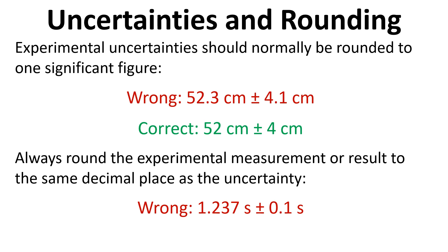Here's another example. This would be incorrect because the measurement has too many decimal places. Our uncertainty is 0.1, which is already at one significant figure, so we leave that as it is. We then round the measurement to 1.2, so that it has the same number of decimal places as the uncertainty.